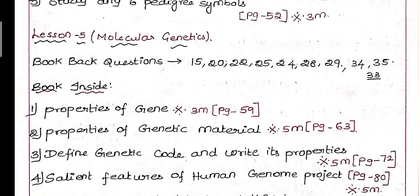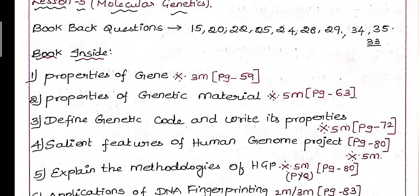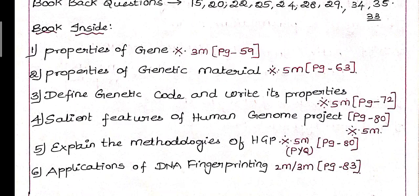15, 20, 22, 25, 24, 28, 29, 34, 35, and sometimes 33. For book inside, first question is 'Properties of genes', an important 3-mark question. On page 59, left side bottom, there are 6 points.